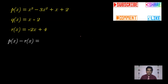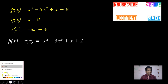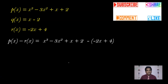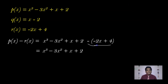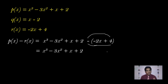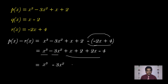p(x) = x³ - 3x² + x + 2. We subtract R(x) = -2x + 4. So p(x) - R(x) = x³ - 3x² + x + 2 - (-2x + 4). This gives x³ - 3x² + x + 2x + 2 - 4 = x³ - 3x² + 3x - 2.